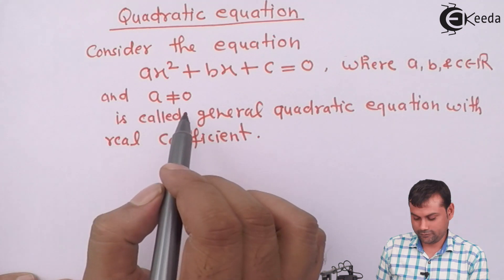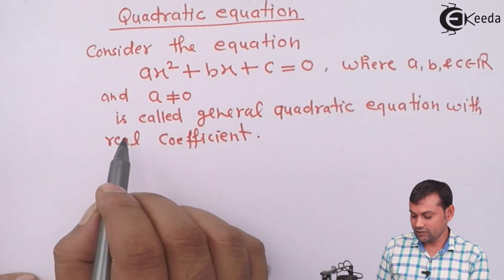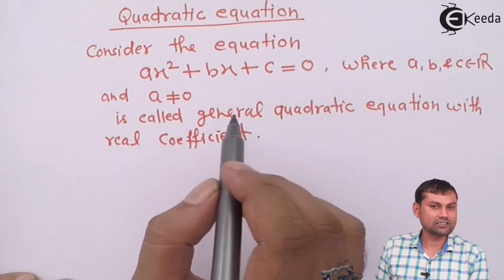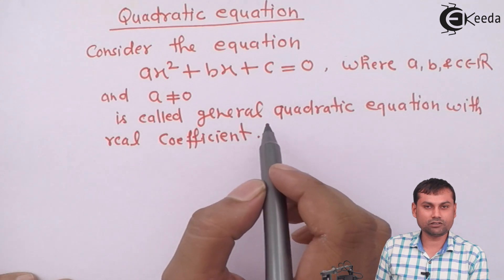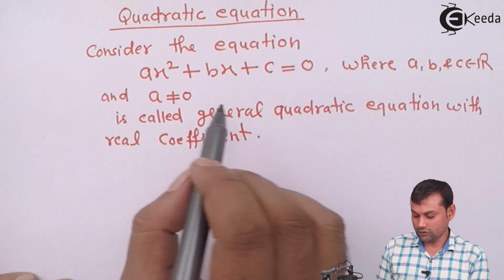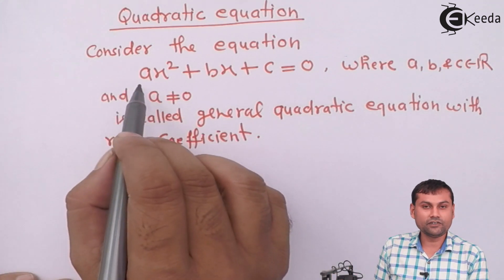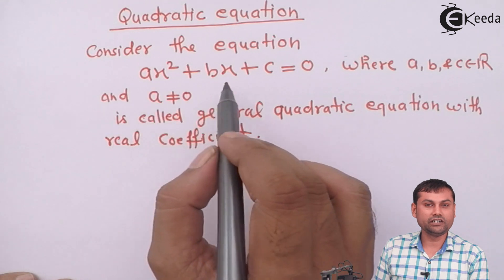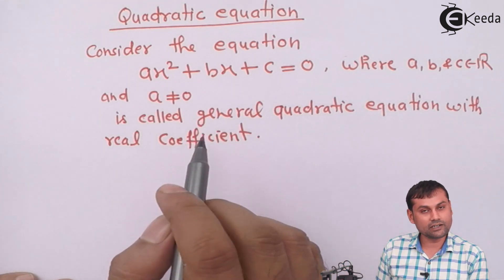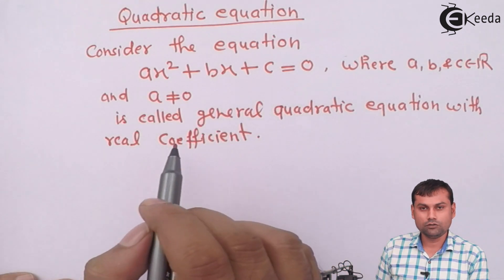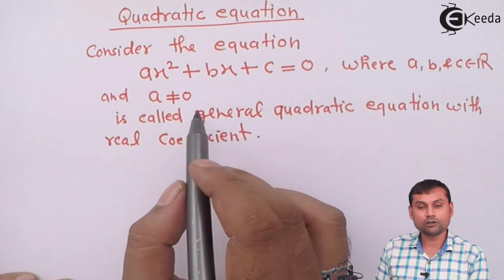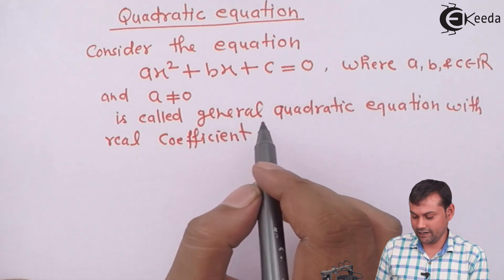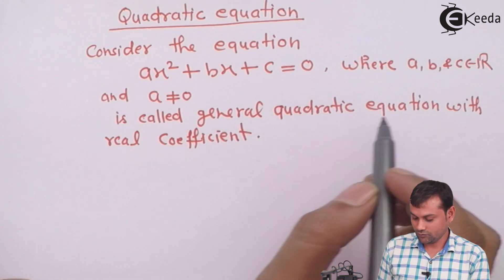So a cannot be 0. This is called the general quadratic equation because when you provide different values for a, b, and c, we get different quadratic equations for the different values of a, b, and c.